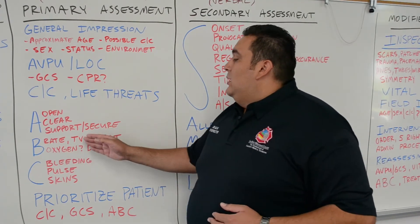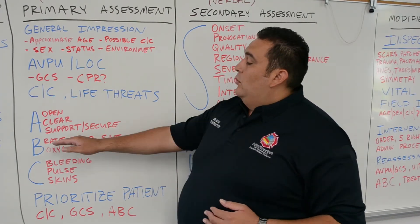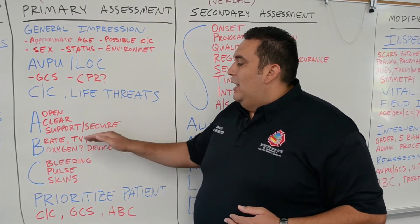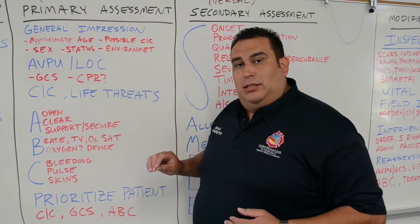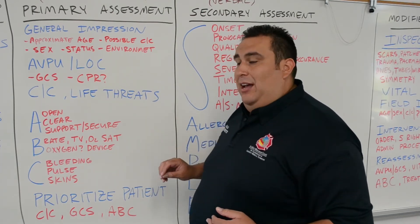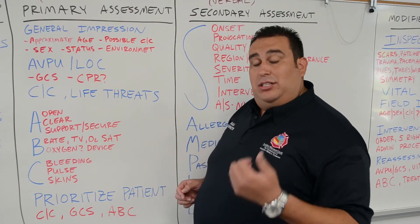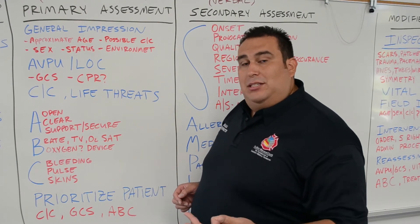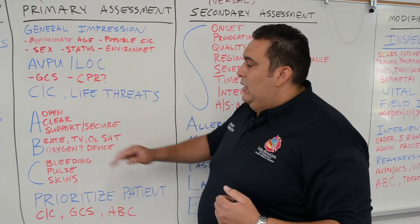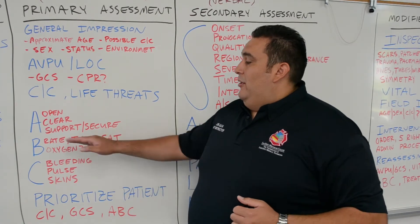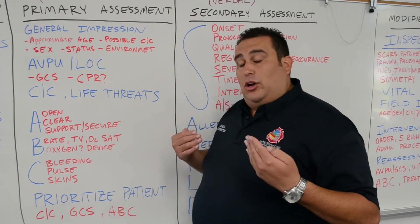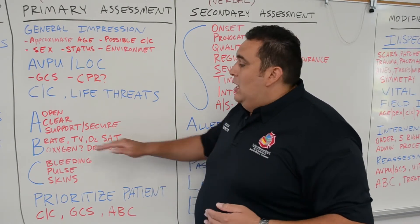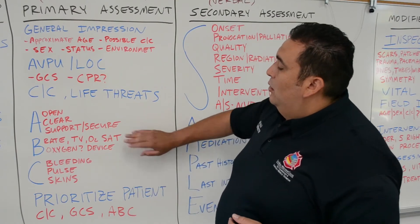For breathing, we look at rate, tidal volume, and O2SAT. Both rate and tidal volume must be adequate for the patient to use a passive oxygen delivery device such as a nasal cannula, non-rebreather, or CPAP — the patient has to be able to draw air in. If either is abnormal, you may need to assist ventilations using a BVM.